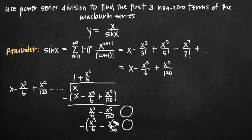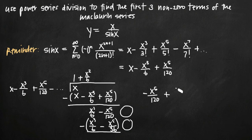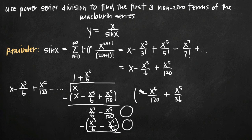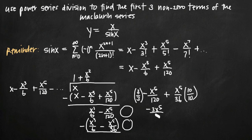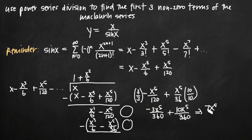Now we subtract what we got from the row above it. x cubed over 6 minus x cubed over 6 gives us 0. Then we have negative x to the fifth over 120 minus a negative, which becomes plus x to the fifth over 36. To find the value of this sum, we find the least common denominator, which is 360. Multiplying the first term by 3 over 3 and the second by 10 over 10, we get negative 3x to the fifth over 360 plus 10x to the fifth over 360, which gives us 7x to the fifth over 360.